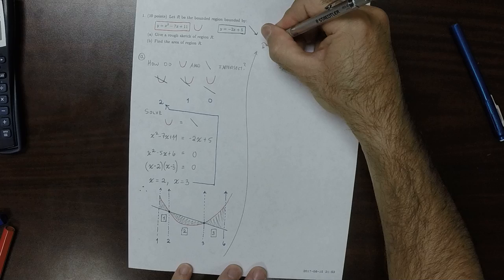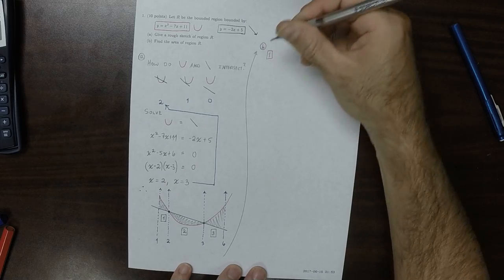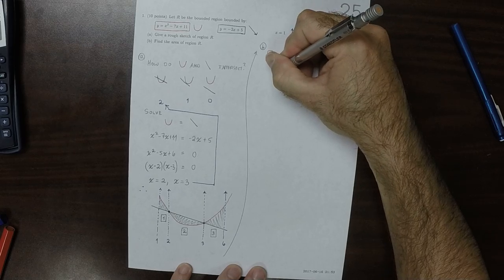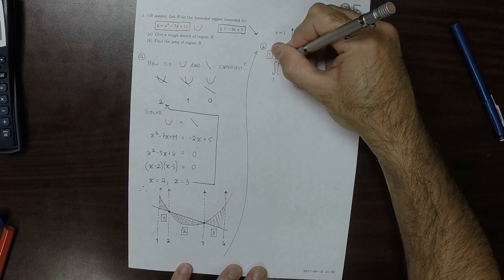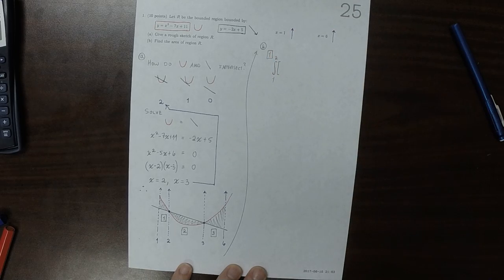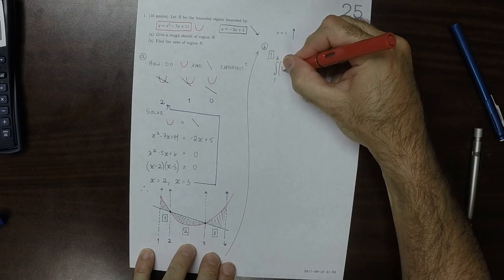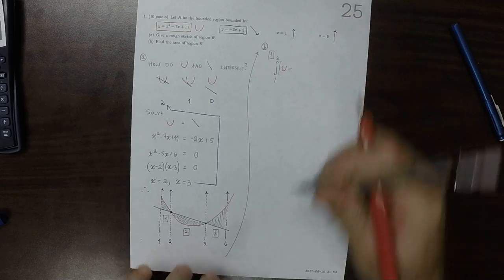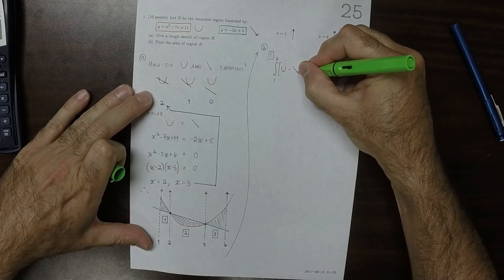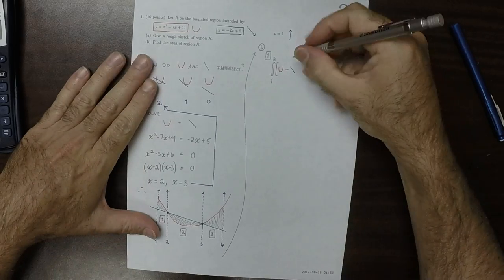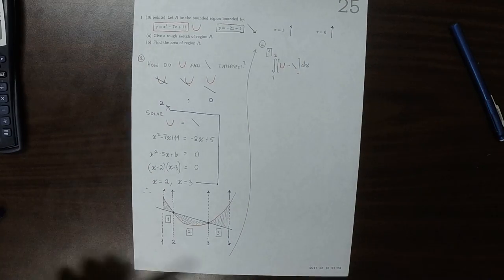So for part B, region 1, the formula for that is the integral from 1 to 2 of, conceptually, it will be the parabola minus the line. The reason why it will be the parabola minus the line is because in region 1 the parabola is the one on top.